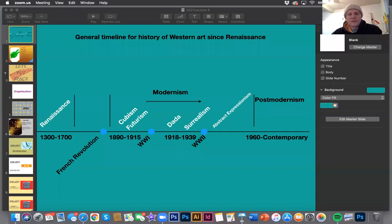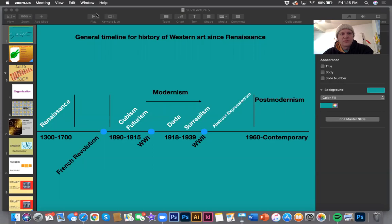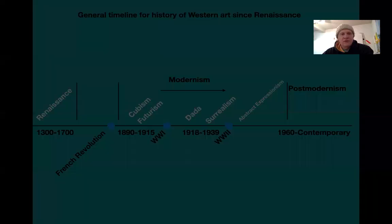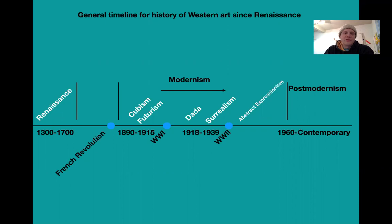Today we are on to composition, so I'll pull up the slides. What I first want to show you is this general timeline that we'll add to for the history of Western art since the Renaissance. This is super generalized, and what I want you to see is where some of the words I've been using fall onto a timeline since about 1300.